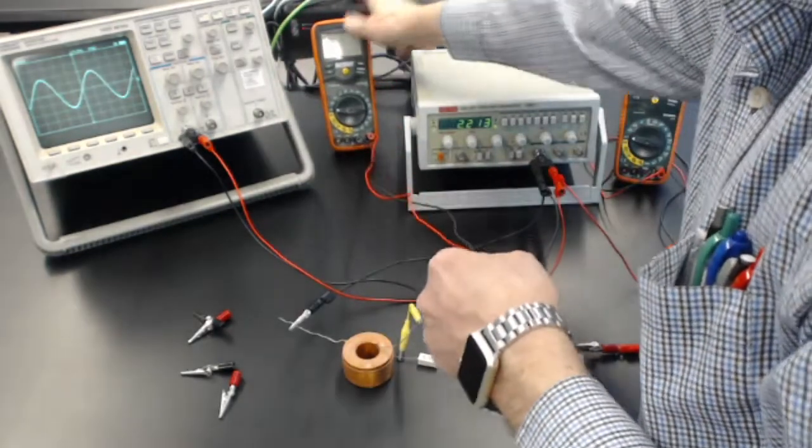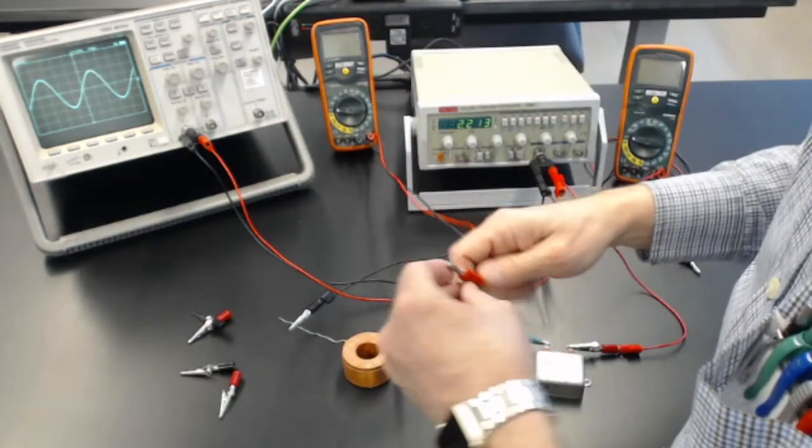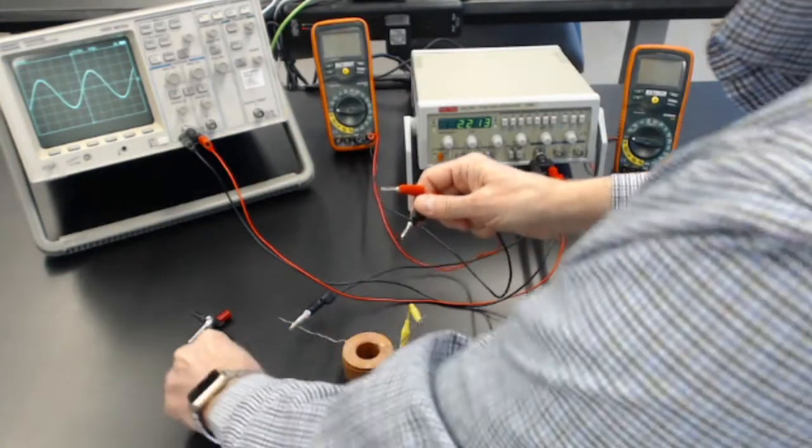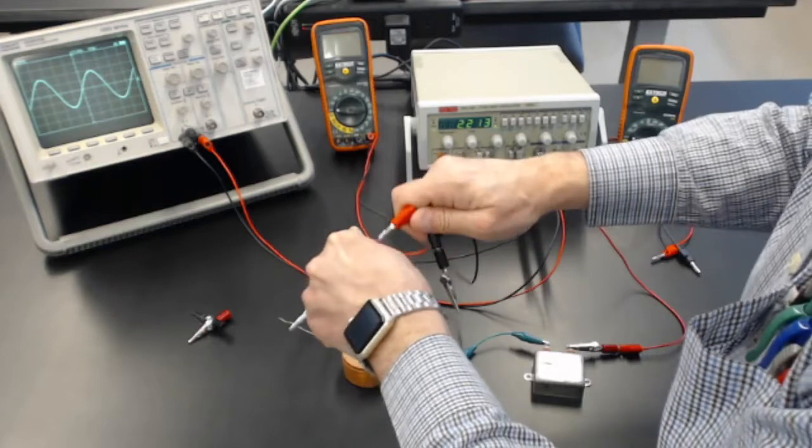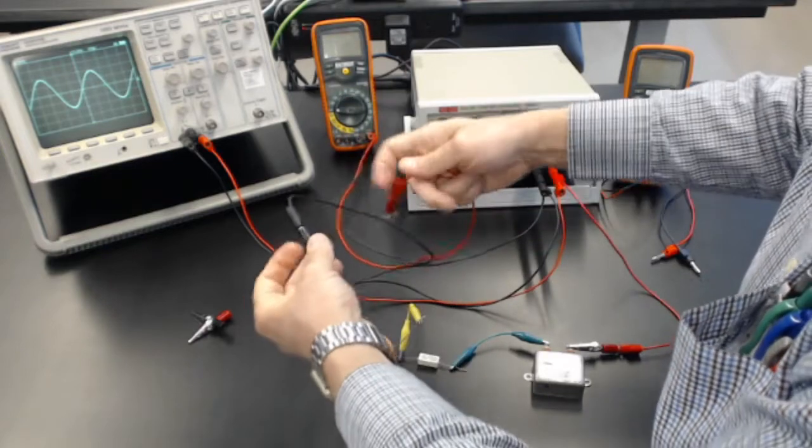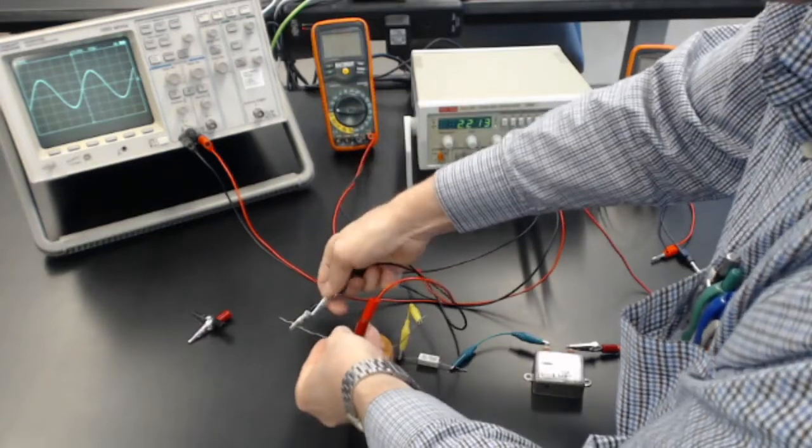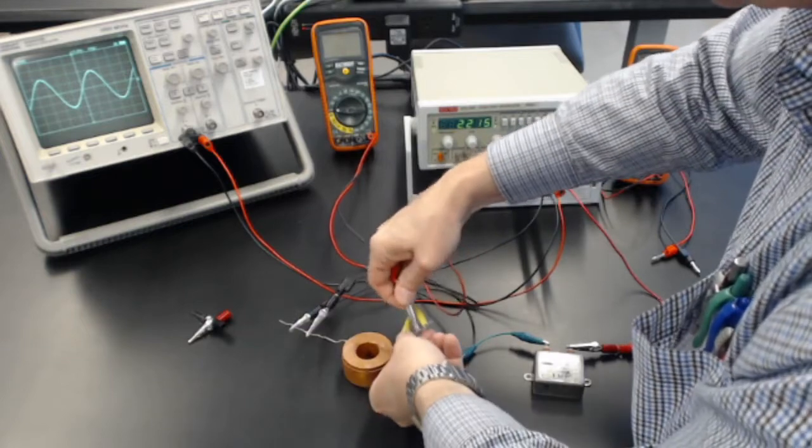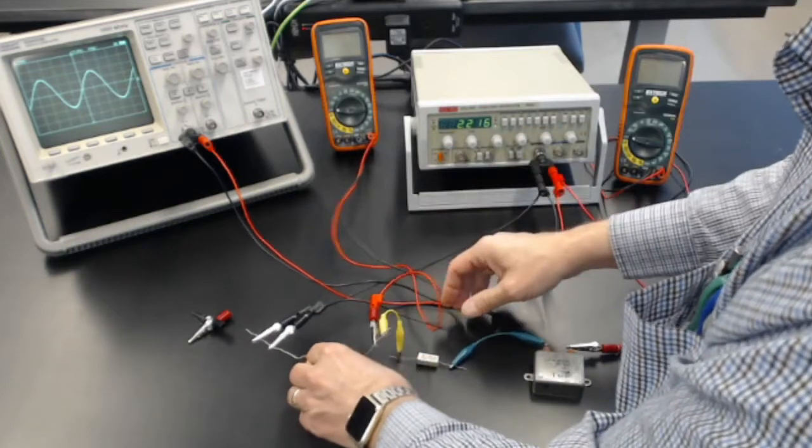Then we'll take one of the digital voltmeters with the two wires coming out. They're in the voltage holes to measure voltage, and I'll connect them across the two wires coming out of the inductor. And that will be V sub L.